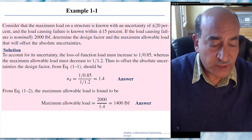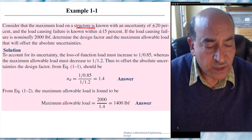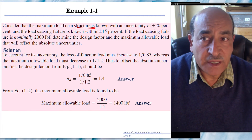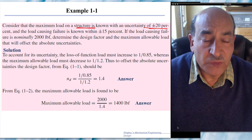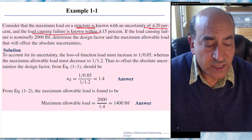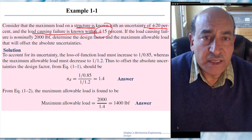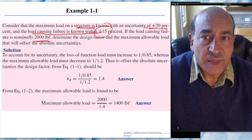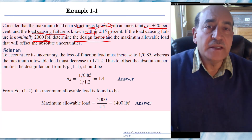In Example 1.1, we have a structure with a known loading that is known to plus or minus 20 percent. For this structure, the load that causes failure is known within plus or minus 15 percent. Nominally, the load that causes failure is 2,000 pounds — that's the nominal value.